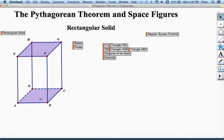A, B, C, D is one of the rectangular bases. Looks a little bit like a square, but it's a rectangle. E, F, G, H is the other rectangular base. All rectangular solids have two bases.